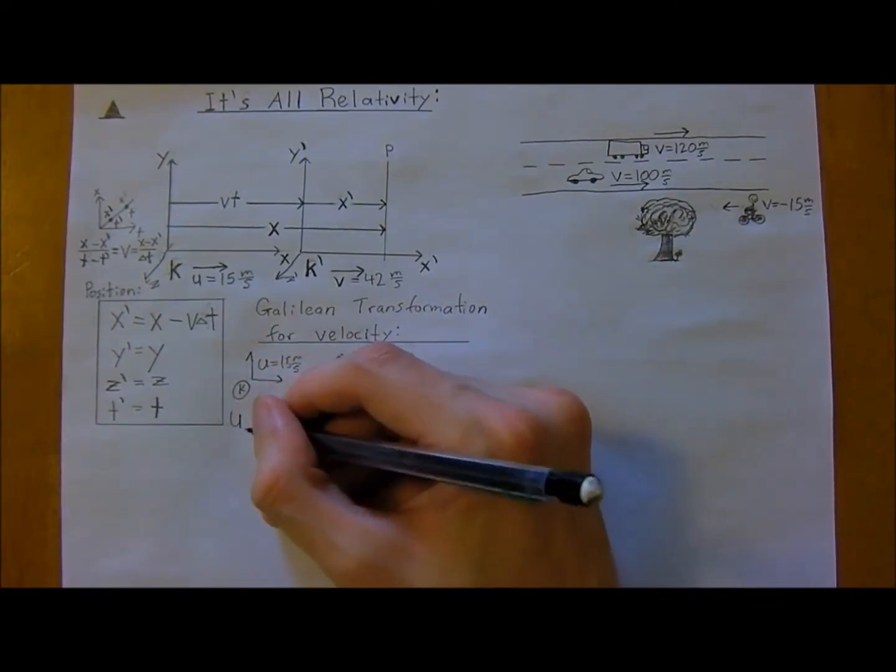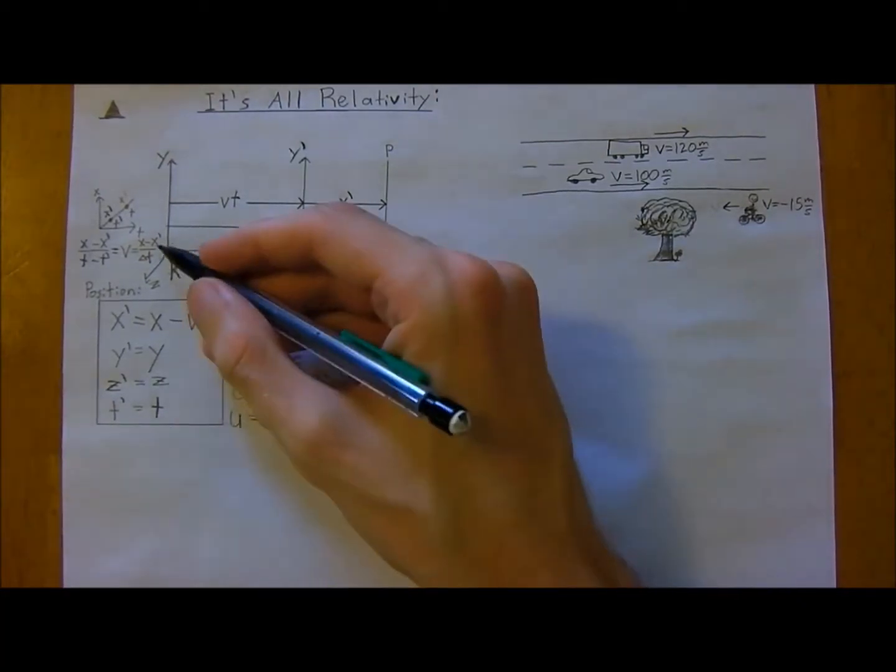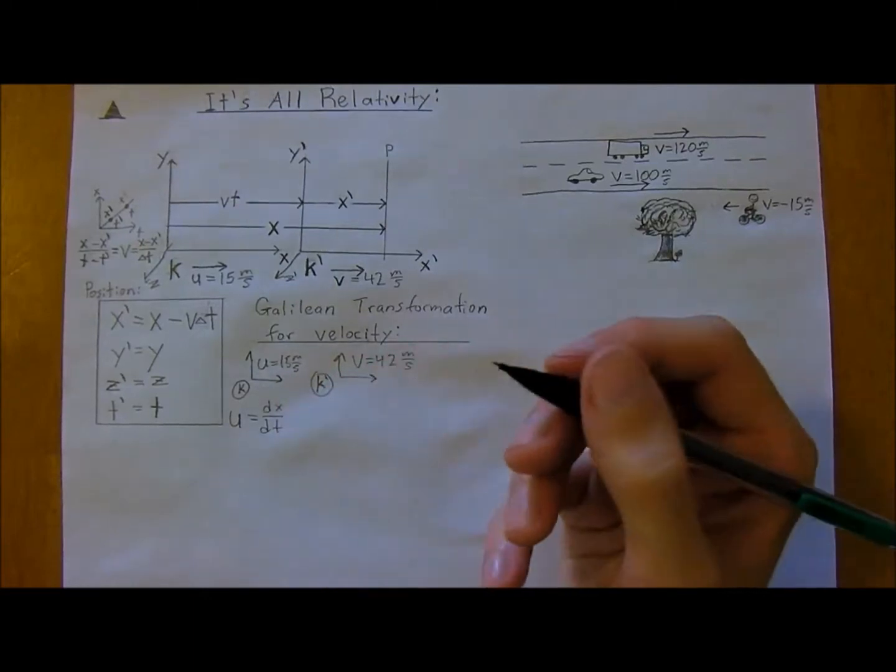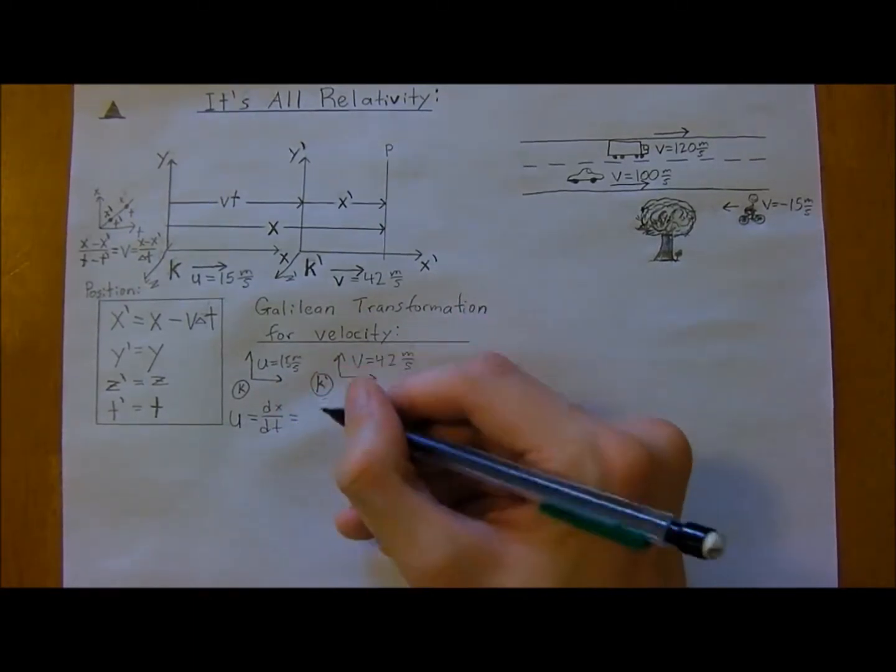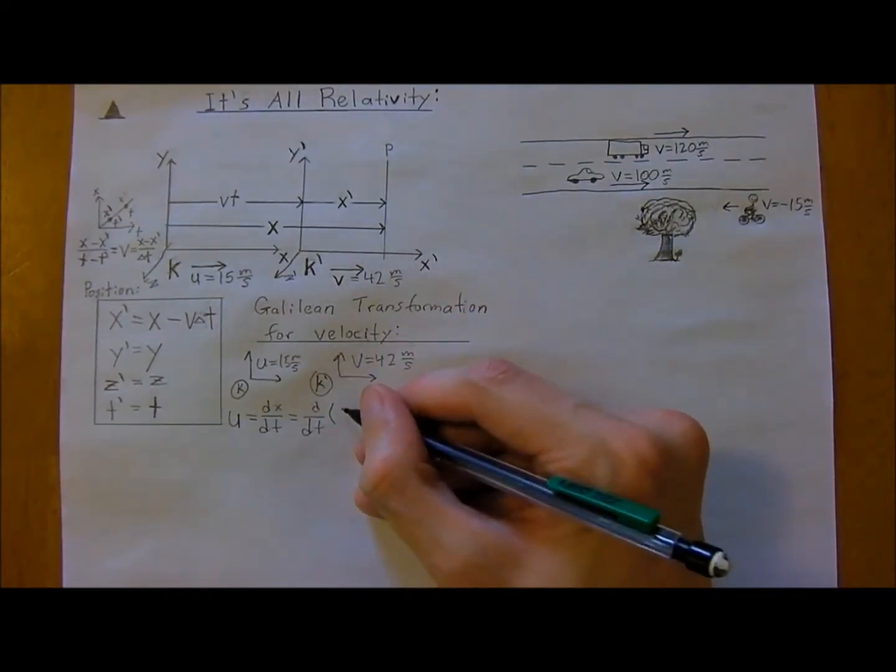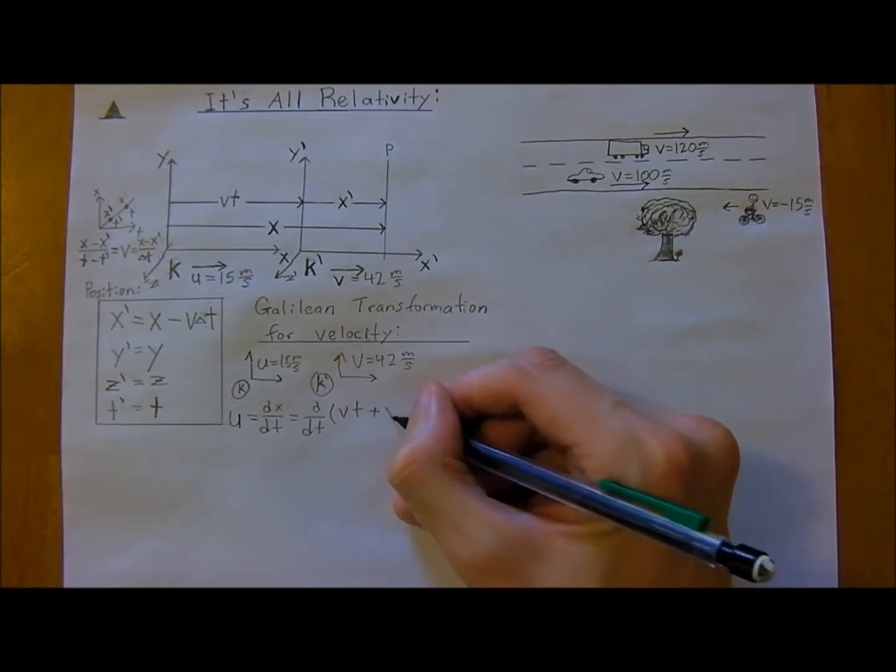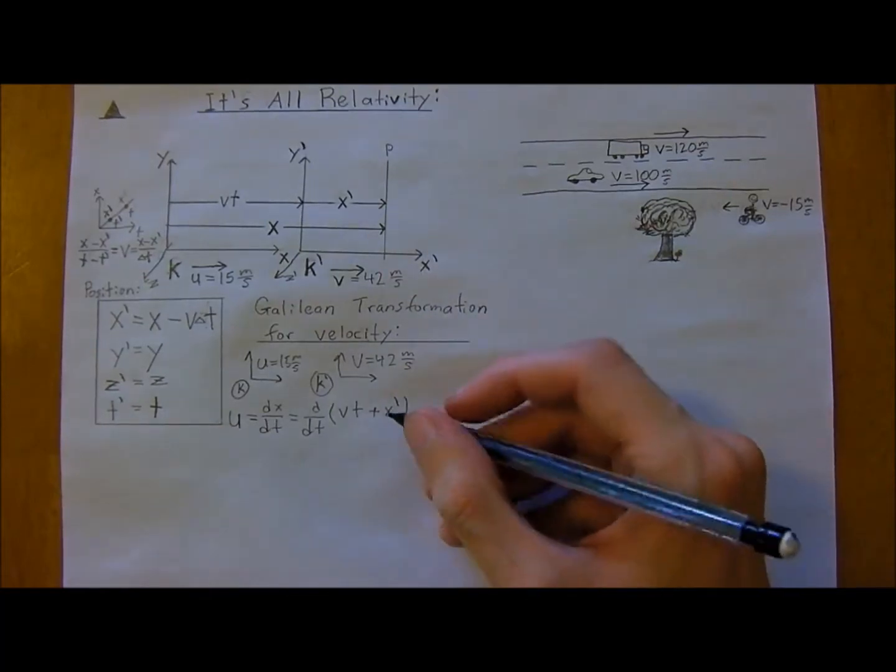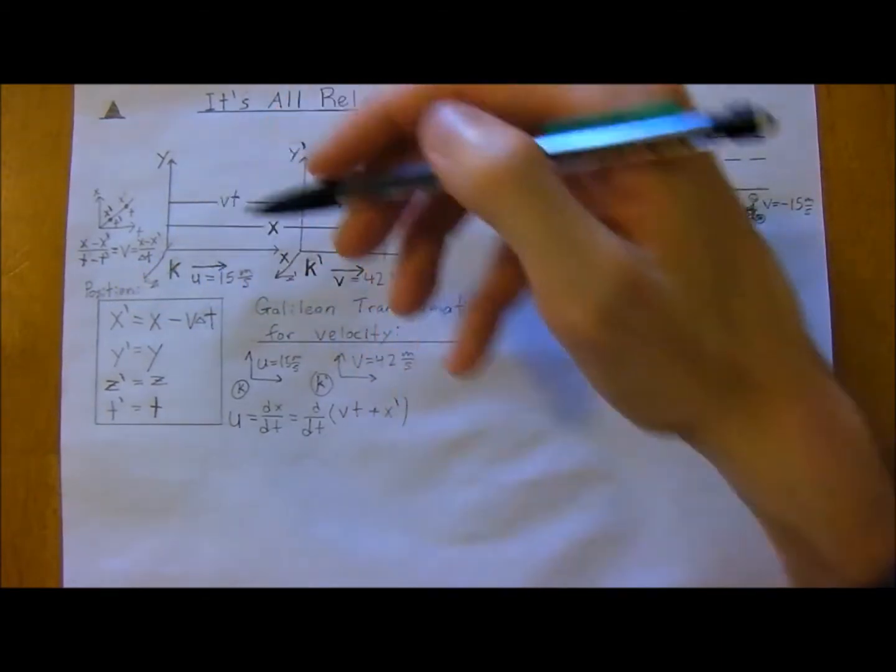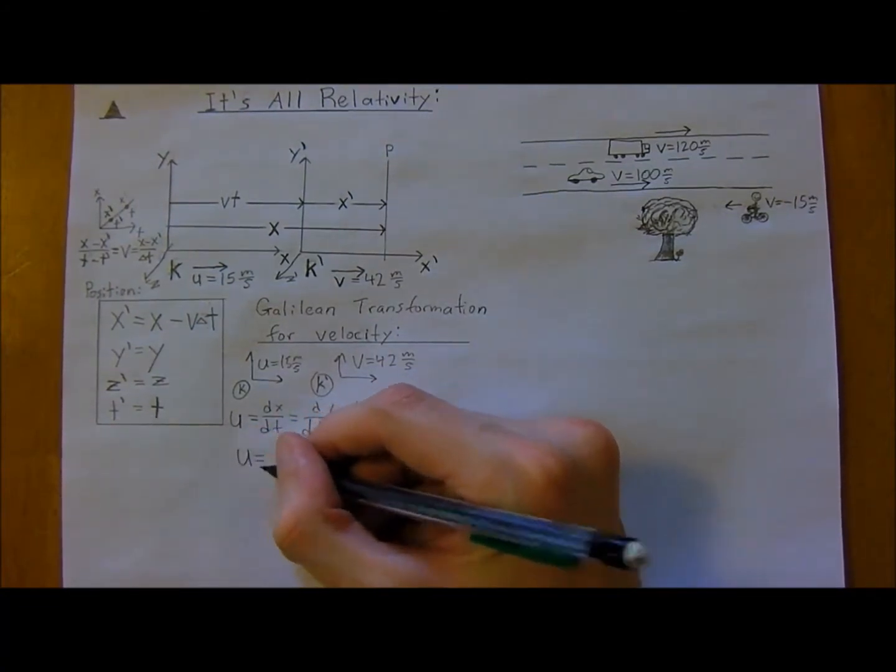And so velocity, and remember, u just represents velocity in the k frame of reference, so really it's change in x over change in time. And actually, to break this out even further, we can say it's just the derivative with respect to time of vt plus x-naught, and this is just, well, if you rearrange this, bring velocity over to the other side, then it's x-naught plus v delta t.